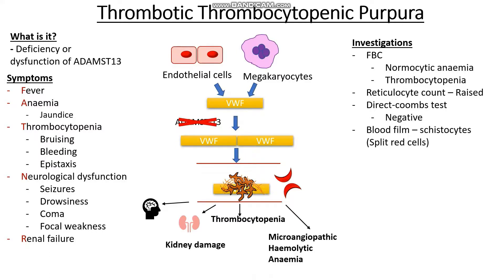The next thing we want to do is a blood film. On a blood film we're actually going to see the remnants of these blood cells, something that we call schistocytes, because they kind of look like helmets. We're also going to want to do a urinalysis, and on the dipstick we're going to see the presence of proteins in our urine. We're also going to do a urea and electrolytes, where our urea and creatinine are often raised because we have significant kidney damage.